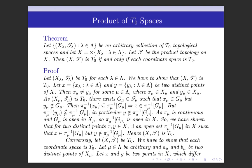Since πμ is continuous and Gμ is open, and the inverse image of any open set under a continuous map is open, πμ⁻¹(Gμ) is open in X. So we have shown that for two distinct points x and y in X, there exists an open set πμ⁻¹(Gμ) such that x∈πμ⁻¹(Gμ) but y∉πμ⁻¹(Gμ). Hence (X,T) is T0.